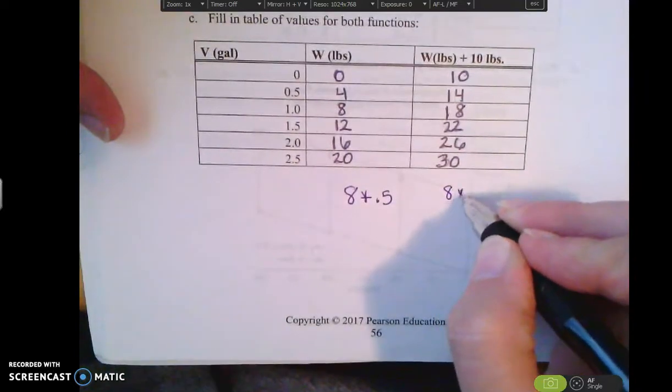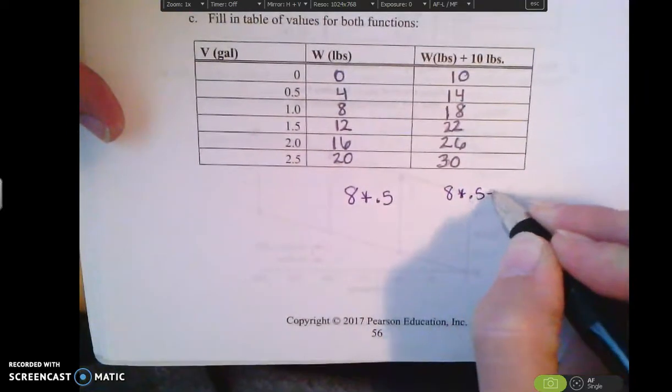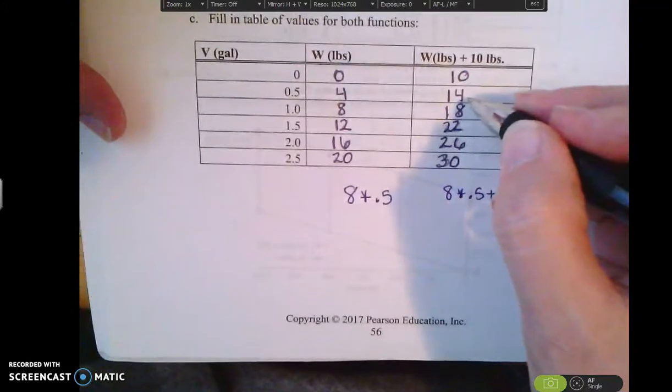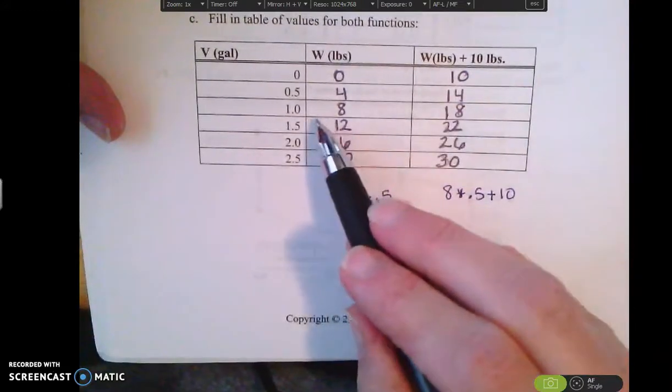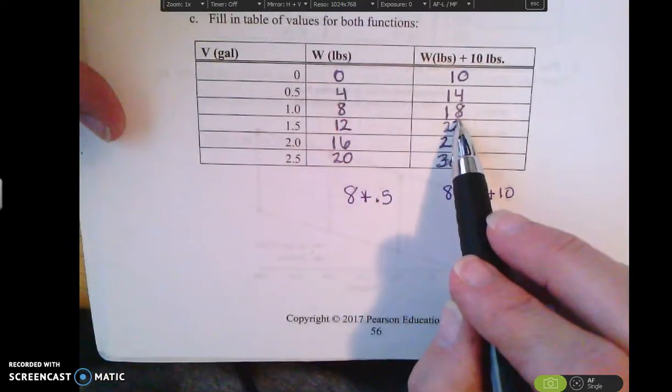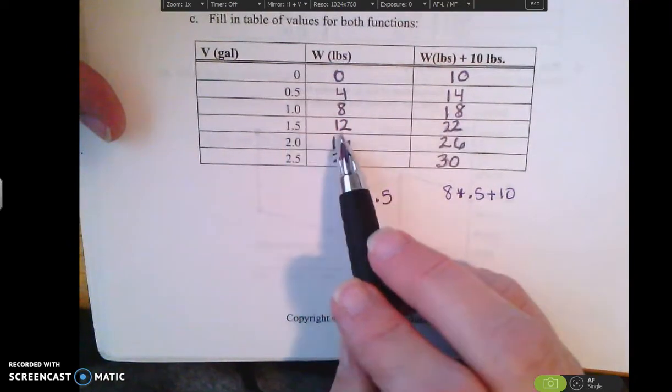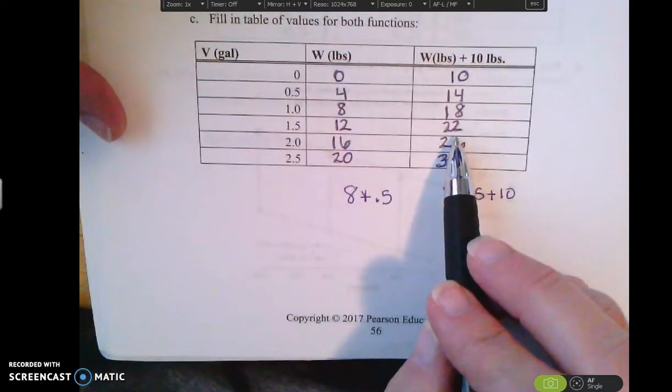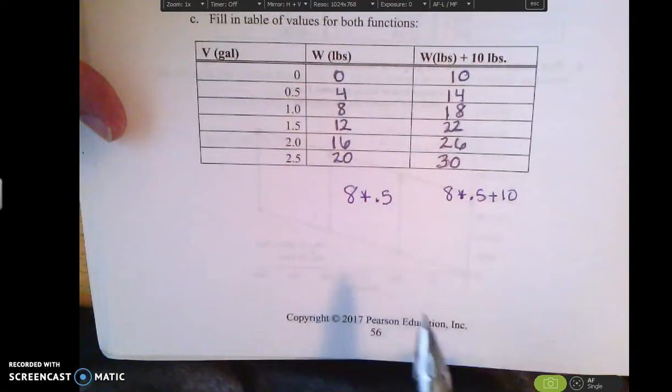And I can keep doing that. For one gallon it would be 8 and 18 for the other bucket. 1.5 would be 12 pounds and 22 for the other bucket. And I can do that for each of these values.